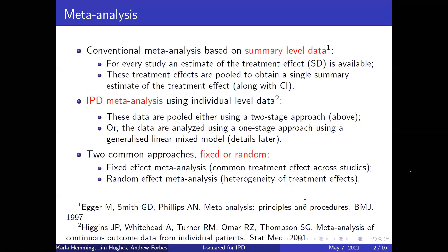Alternatively, if we do have access to the individual level data, we can do something called a one-stage approach, and that's going to be the focus of what I'm going to talk about today. There are also two other choices: we can decide either that there's a common treatment effect across our studies and model everything using fixed effects, or as is more conventional, we allow for heterogeneity of treatment effects across studies and conduct a random effects meta-analysis.